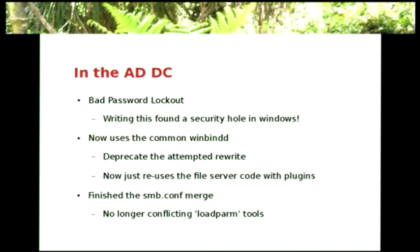In the ADDC, we've got bad password lockout, which is really important in some enterprise environments. We've now got the common Winbind, which gets us a little bit closer to being able to get towards domain trusts. We've finished the smb.conf merge — we no longer have the ridiculous situation of two load tools giving two different ideas of the defaults. And some great work from my colleague Garming Sam ensured our documentation always matches our defaults — you can't add a parameter to Samba without at least starting on the man page, which means you're likely to finish it.